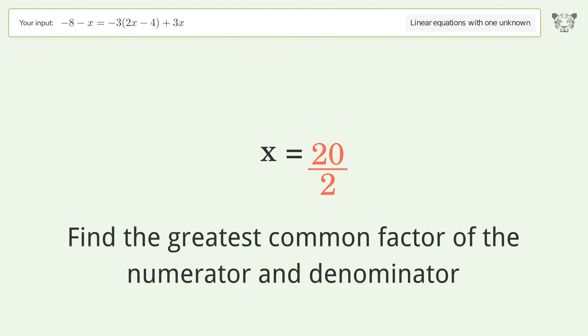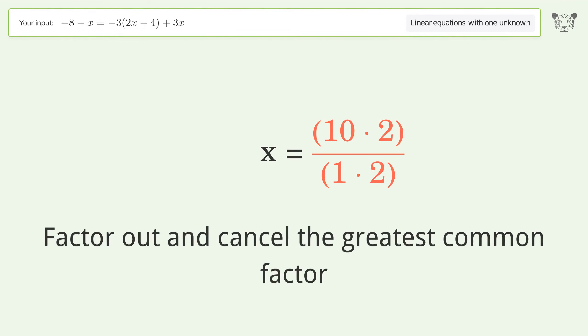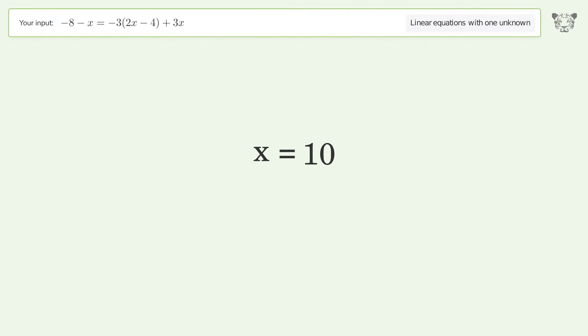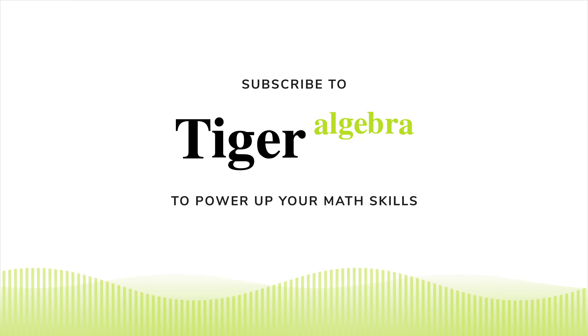Find the greatest common factor of the numerator and denominator. Factor out and cancel the greatest common factor. And so the final result is x equals 10, which is the major part of the question.